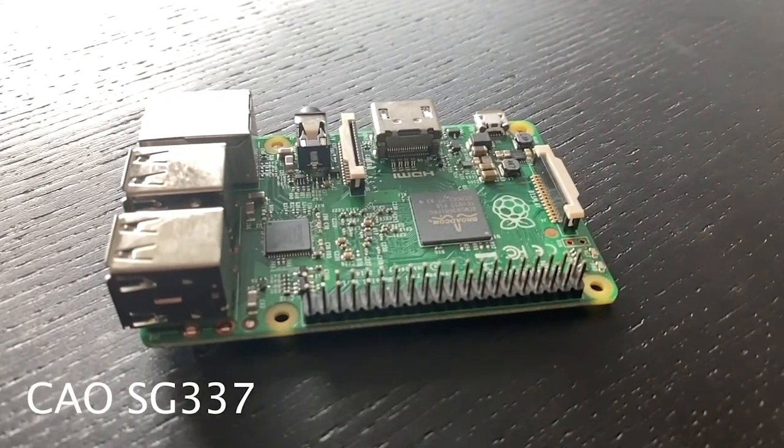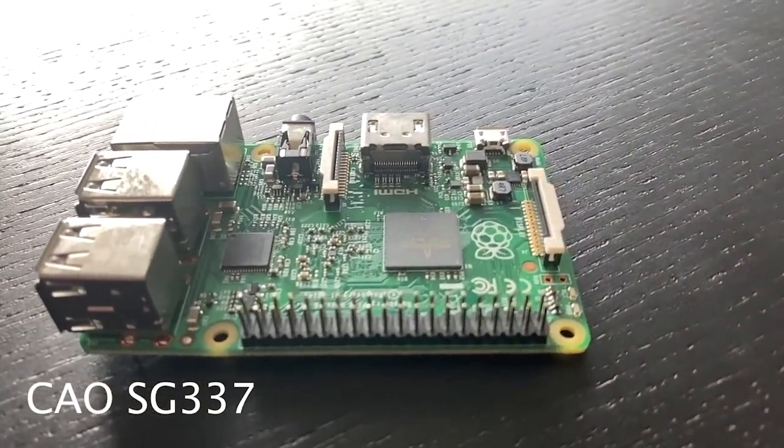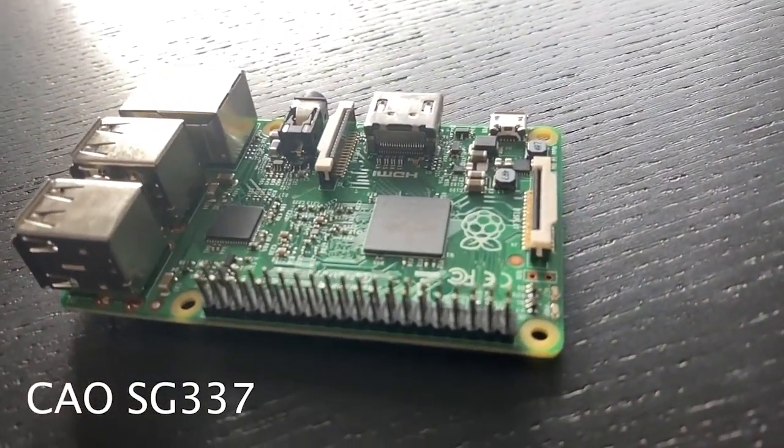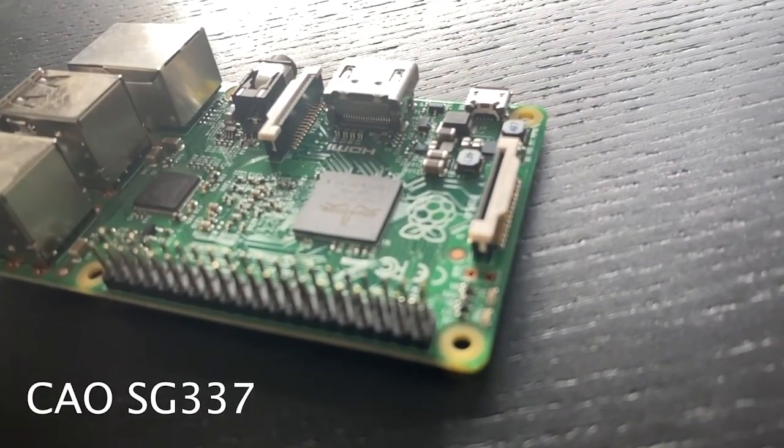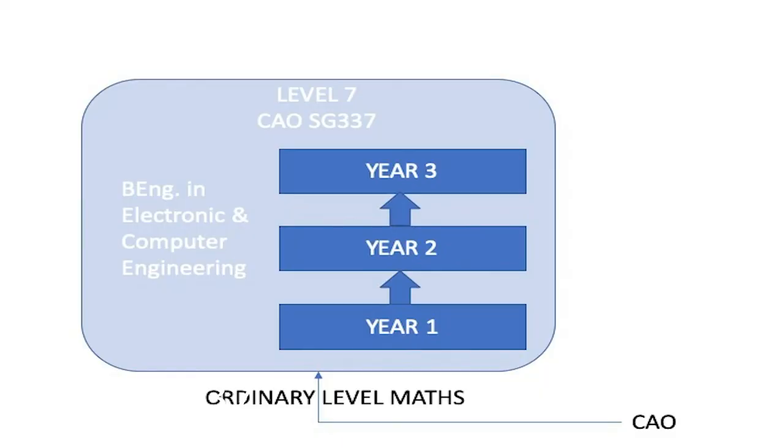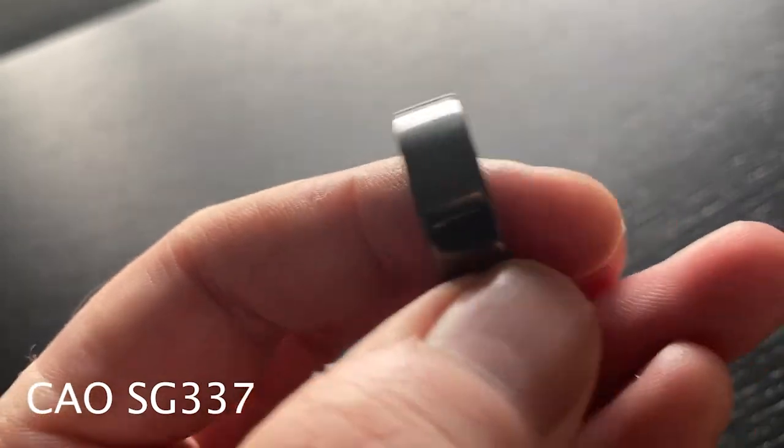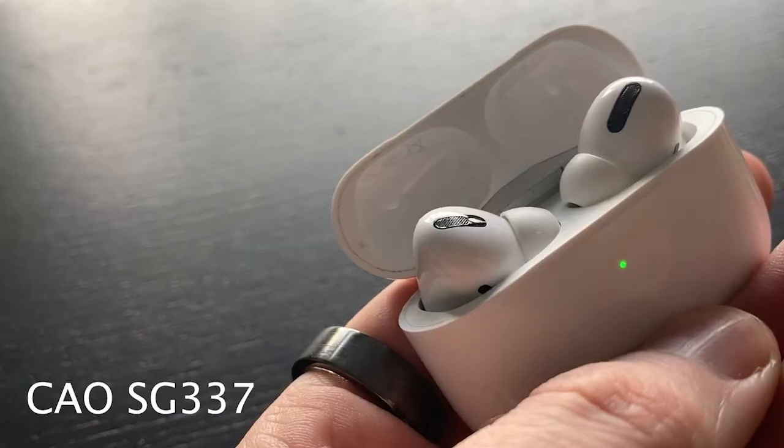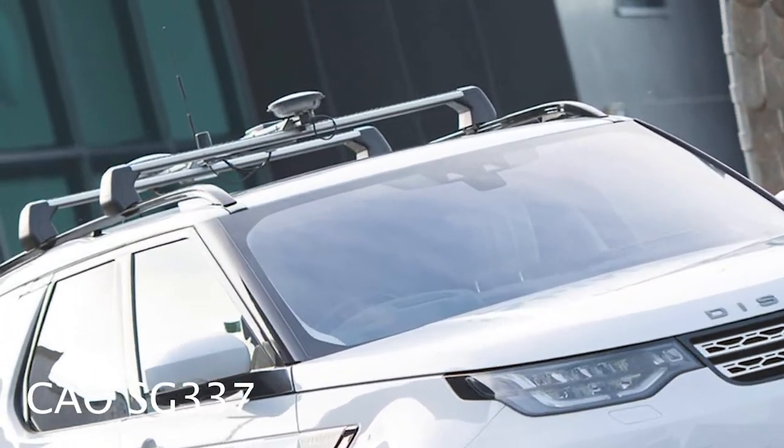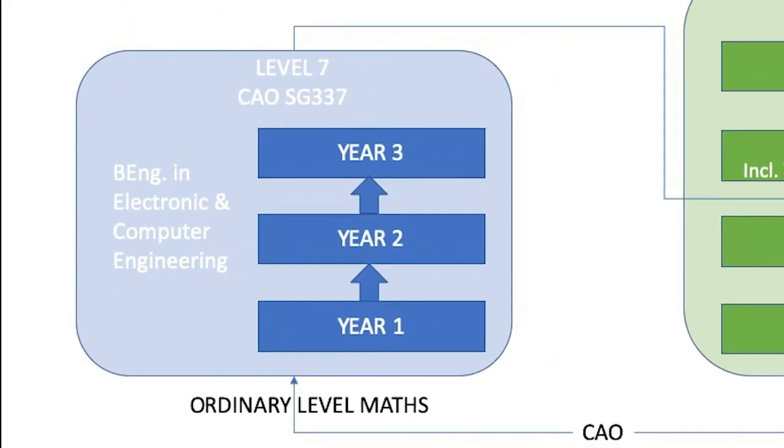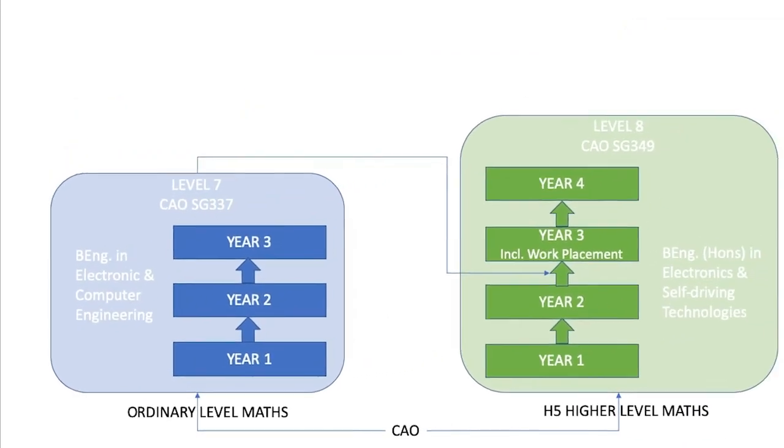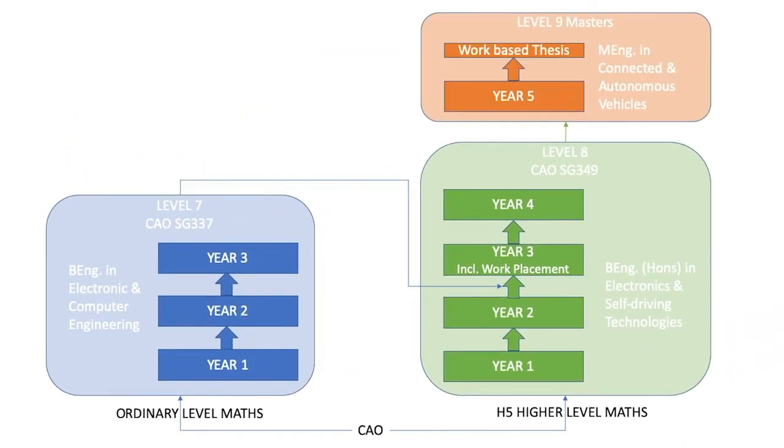If you are interested in technology or engineering but are not doing higher level maths, why not consider our level 7 in Electronic and Computer Engineering? This is a three-year program that looks at the design and development of embedded electronic systems. These are the medical devices that keep us healthy, the consumer devices that keep us entertained, or the controlled systems that keep us safe on the road. You can then progress on to the level 8 in Electronics and Self-Driving Technologies and from there to the masters. Check out the link below for more information.